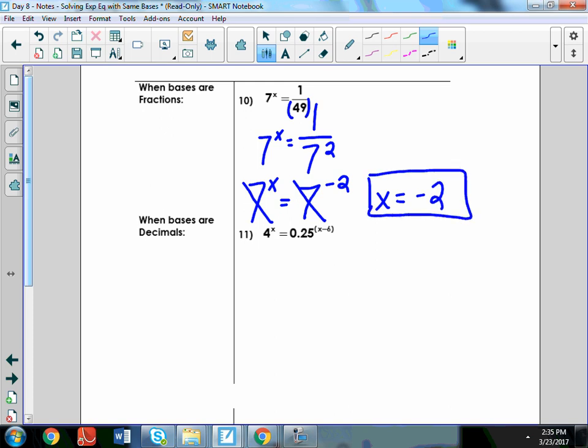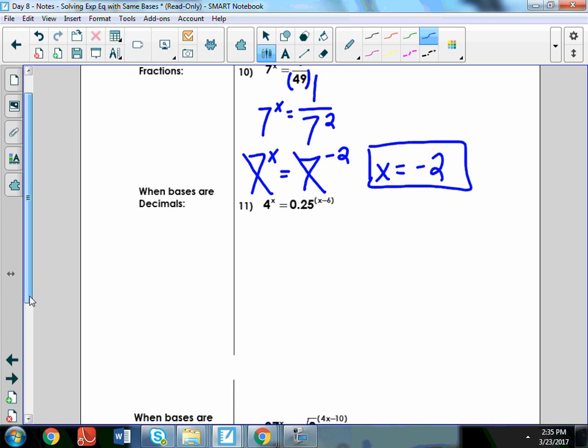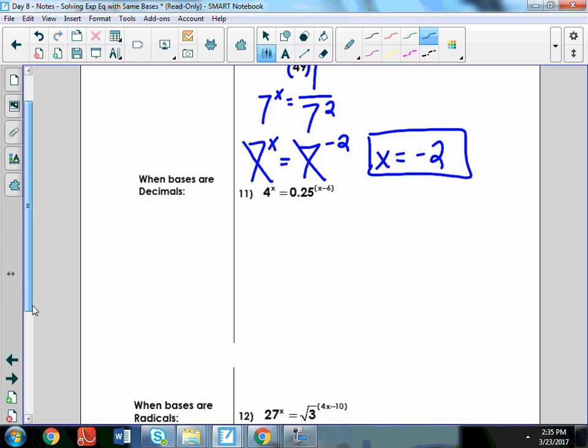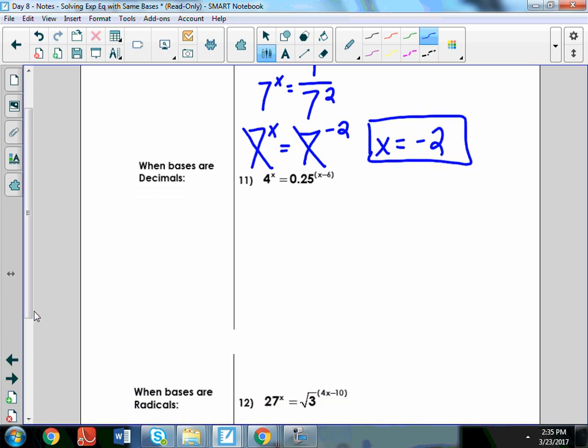So, when you see fractions, that's probably what you're going to do. You're going to move the denominator to the top and change the exponent to a negative number. Okay. When you see decimals, I think the easiest thing to do is to take that decimal and rewrite it as a fraction. Do you guys know what 0.25 is? Very good. 1 over 4. Your calculator will do that, too. Just hit math, and then type in the decimal, and use math, fraction, enter, enter.